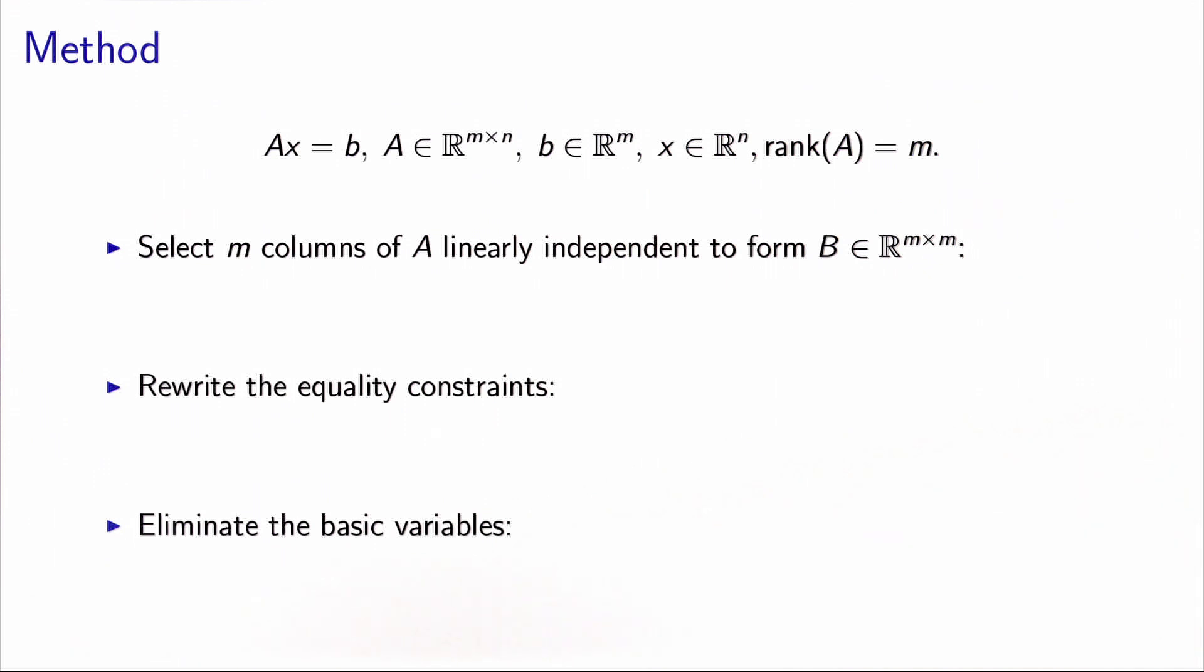The way to eliminate the variables is by selecting m columns of A that are linearly independent. So basically, I need to write A as two parts: a part in which I have m columns, and a part in which I have n minus m columns. So the first m columns must be linearly independent. Why? Because then B would be a square matrix, and because the columns are linearly independent, this square matrix will be invertible, and it will happen to be useful.